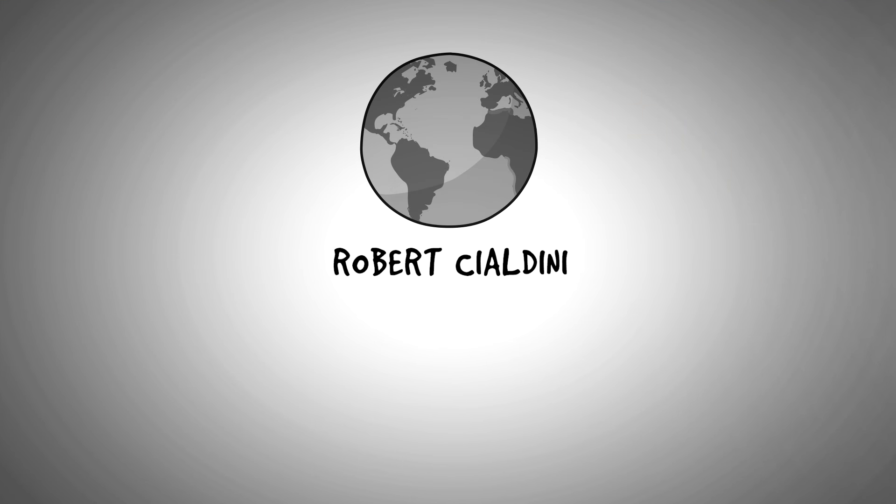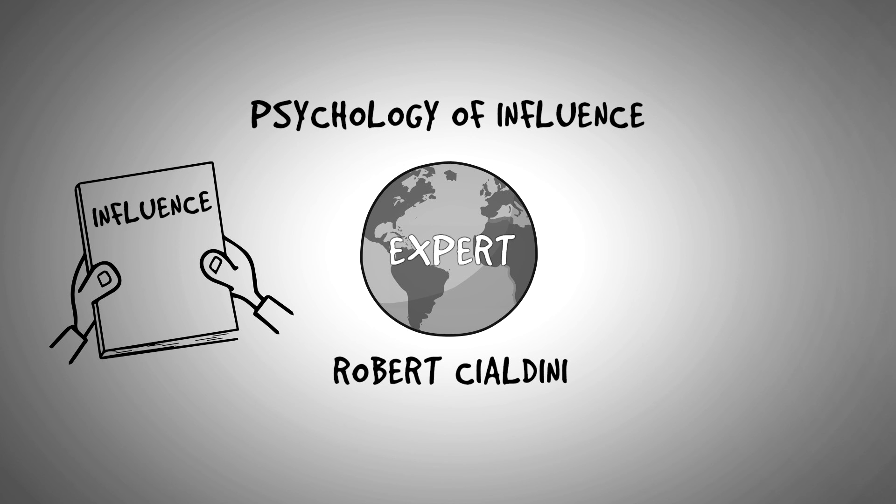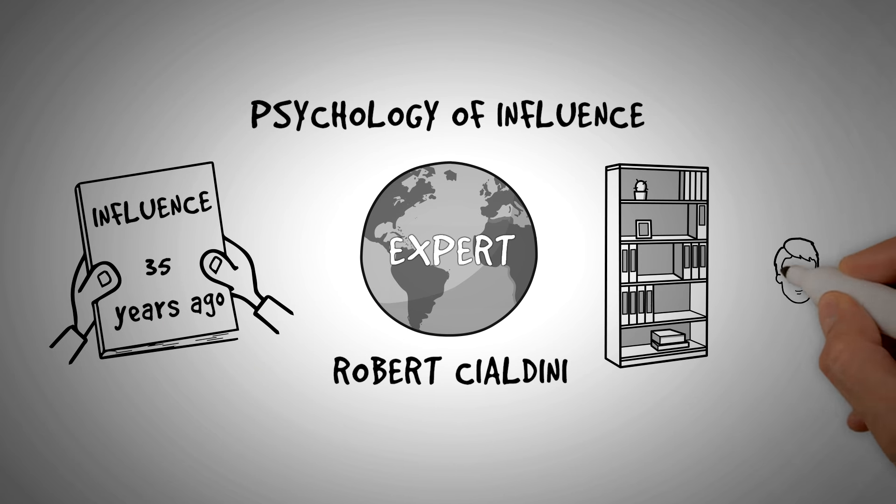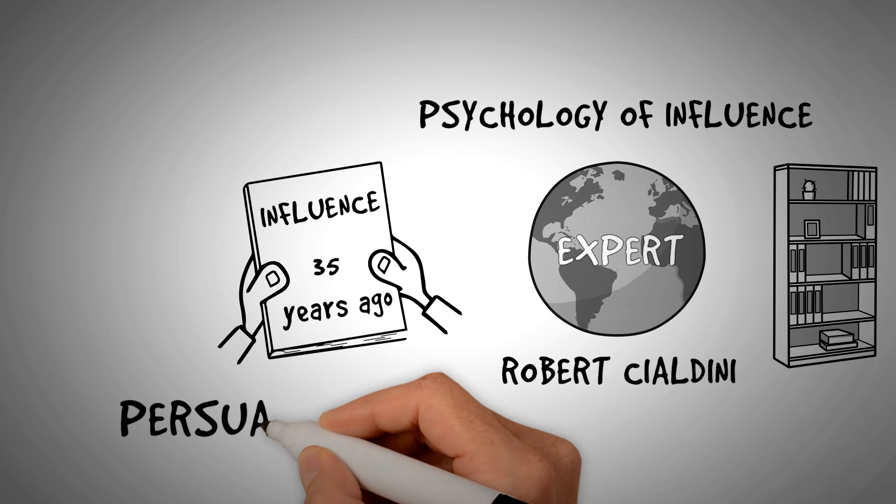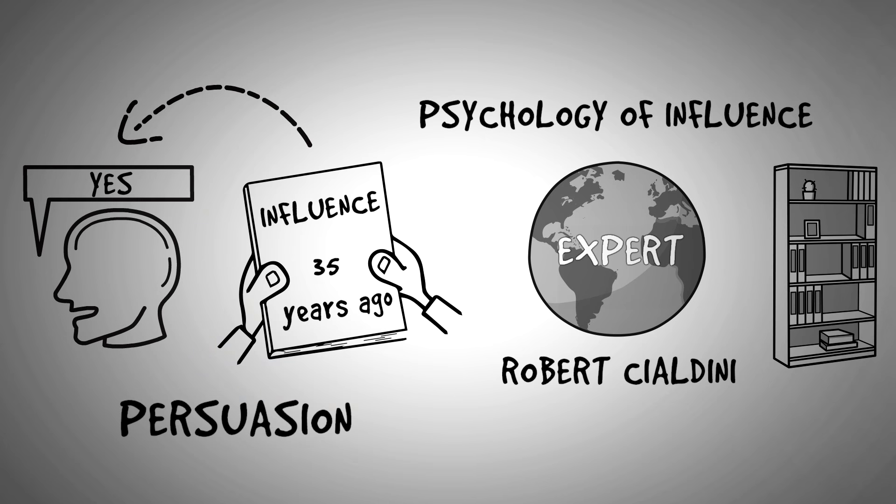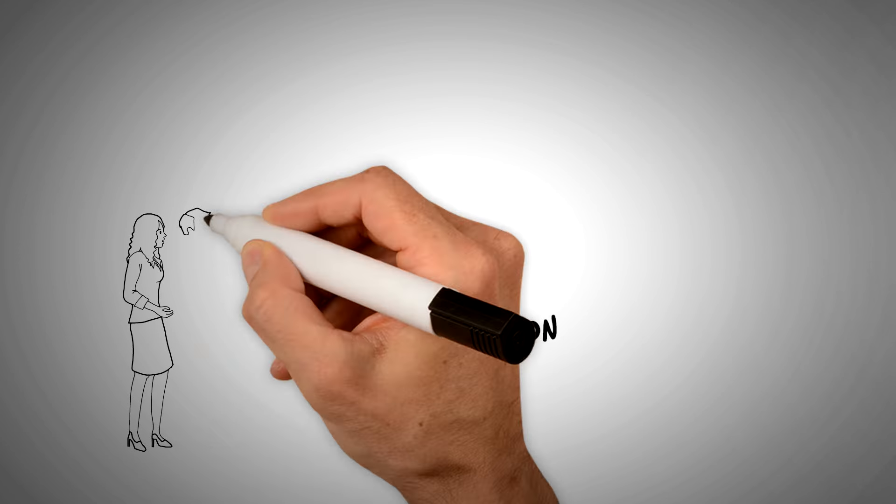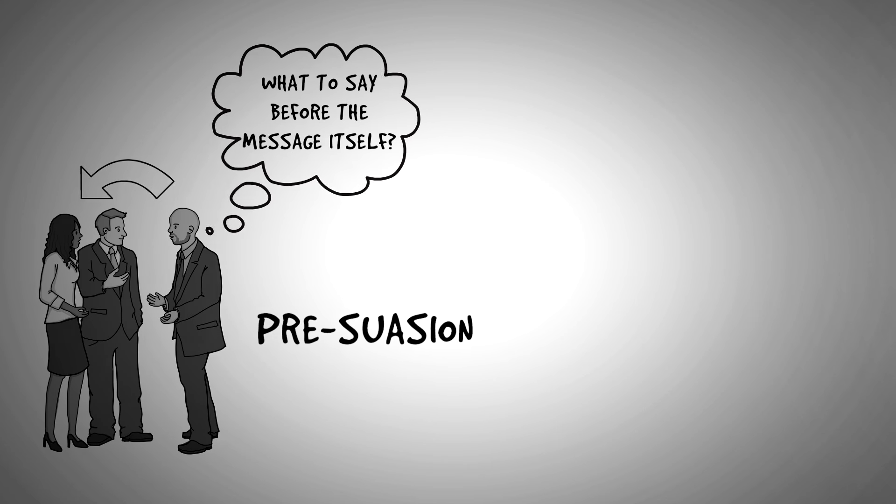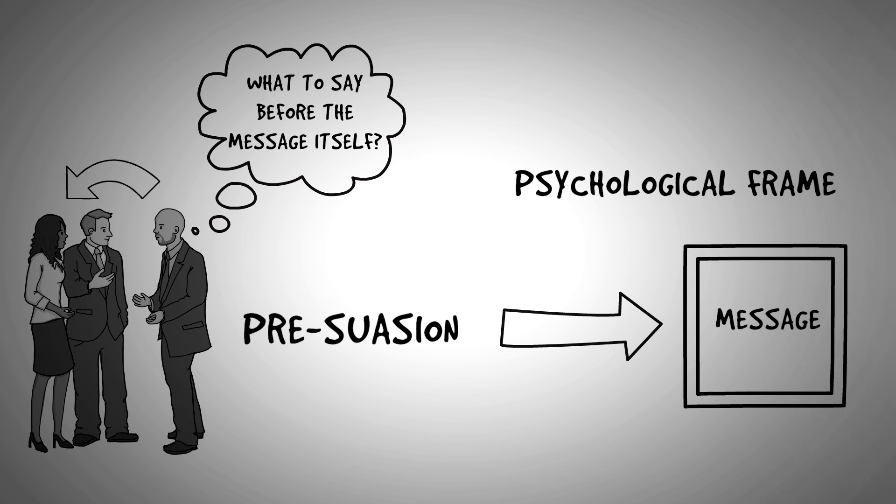Robert Cialdini is one of the world's leading experts in the field of psychology of influence. His fascinating book, Influence, came out more than 35 years ago, but it's still on the bookshelves of some of the most influential and successful people in the world. While Influence deals with persuasion, the art and science of getting someone to yes, Cialdini's new book is called Persuasion, the process of arranging for recipient to be receptive to a message before they encounter it. In other words, it's essentially the psychological frame you deliver your message in.